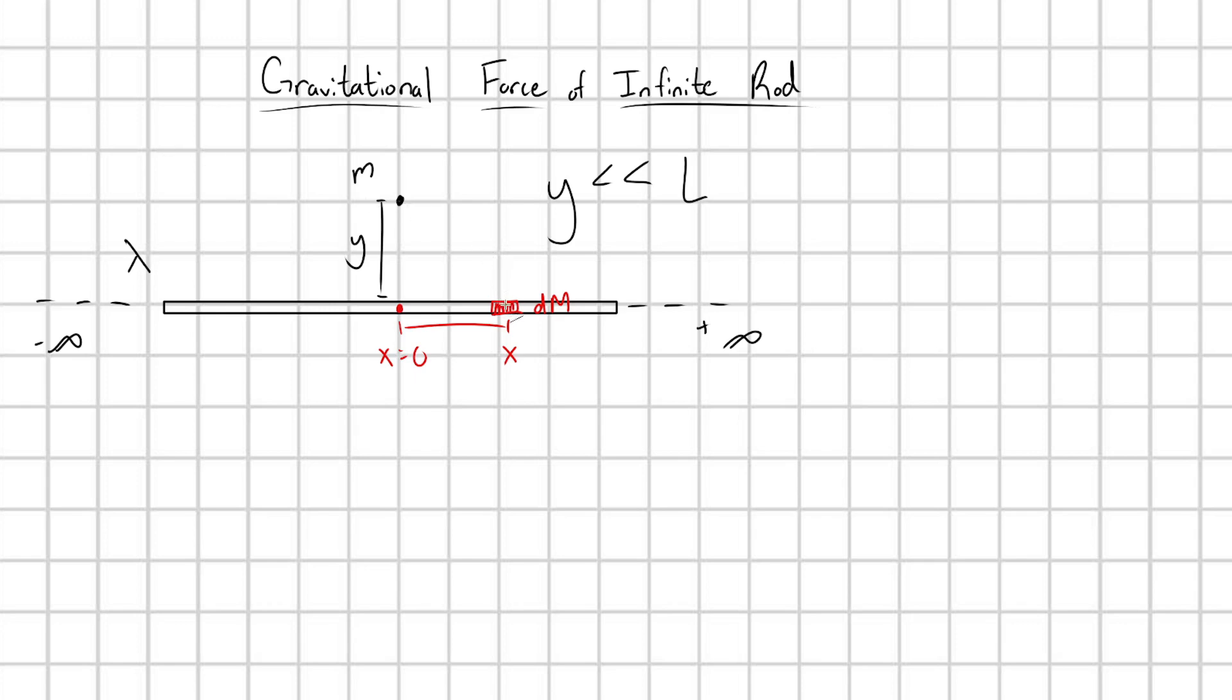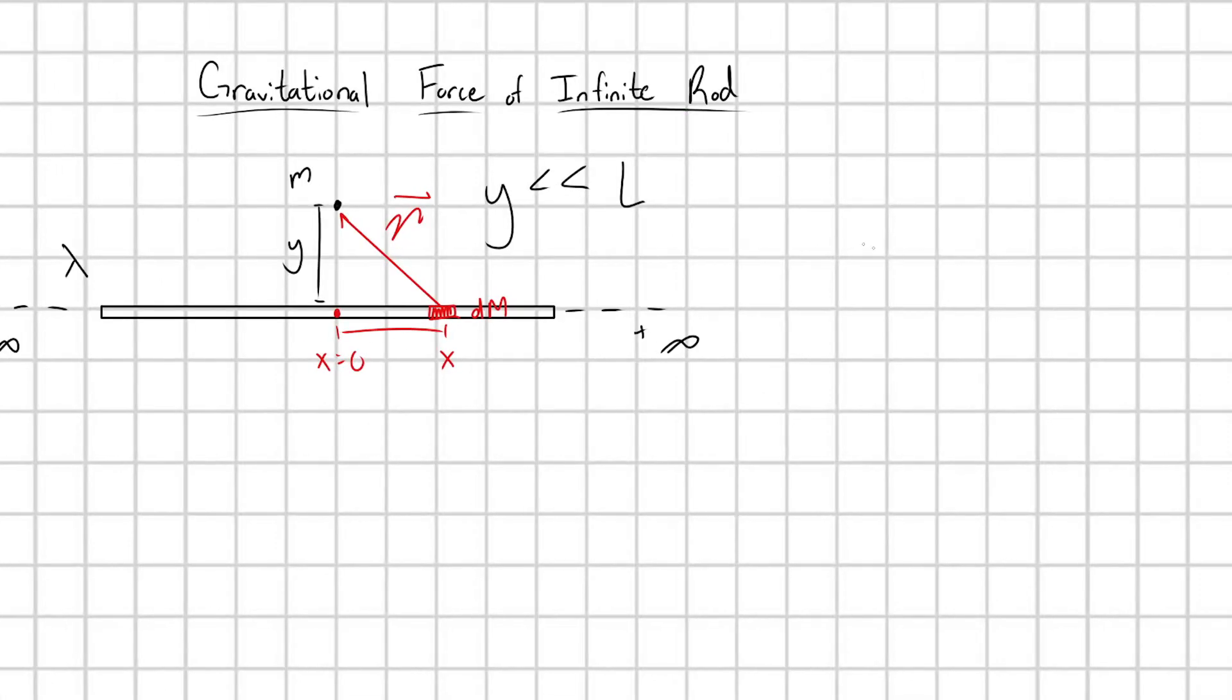And this dm is going to exert a gravitational force on this little point mass m here. How do I express that? Well, let's introduce this vector. I'm going to call this script r here. And if I do this, we can see that the gravitational force on this little point mass m from this dm is going to be equal to minus G little m dm over the magnitude of script r squared in the script r hat direction. It's going to be pointing in that minus direction. This mass is going to be attracted to that dm. And so this is going to be the infinitesimal force from my little mass dm.